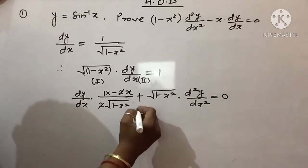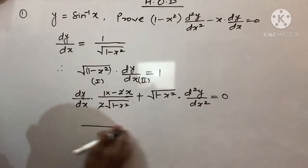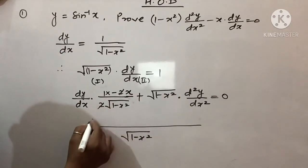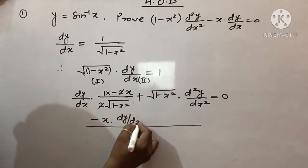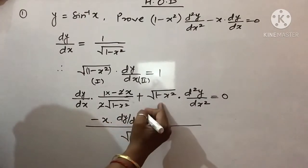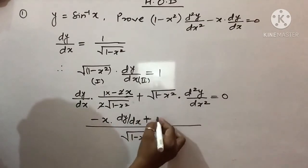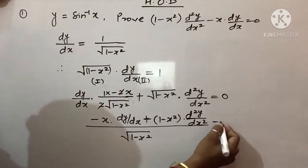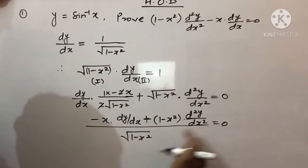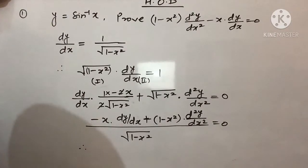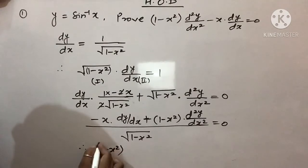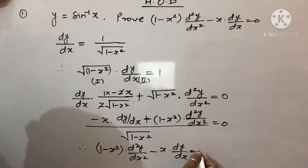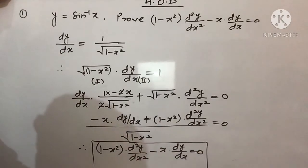Jab maine iska LCM liya toh: ye kitna aayega — it will be √(1 - x²). Ye term isse cancel hoga toh numerator mein aayega minus x·dy/dx, plus is term ka isse multiply hoga: √(1 - x²) ka multiply karunga toh root khatam ho jayega aur bacha d²y/dx², and this equals 0. Aur aap is waale term ko jab cross multiply karaenge toh ye wahan chala jayega. Is tarike se aapka question kya hua: (1 - x²)·d²y/dx² - x·dy/dx = 0. Ye aapka aaj ka pehla question complete ho chuka hai.